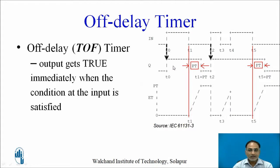At t0 and t2 instants, when input changes from 0 to 1, output changes immediately from 0 to 1. Whereas at t1 and t5, when input changes from 1 to 0, output does not change immediately — at t1 plus PT and t5 plus PT, output changes from 1 to 0 respectively.